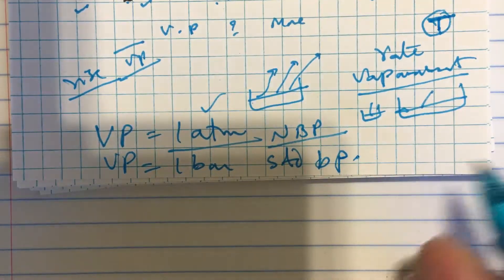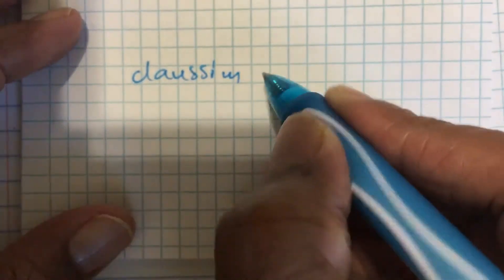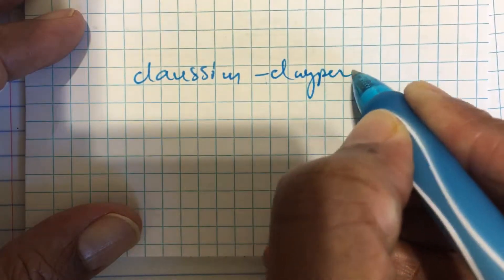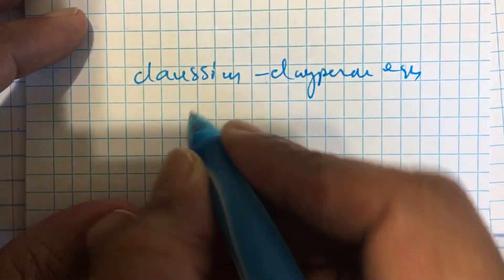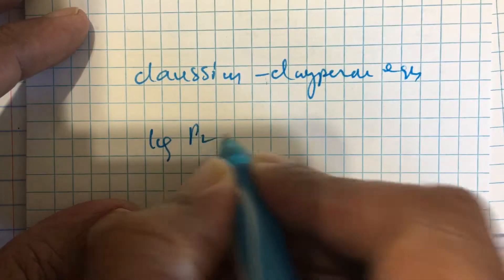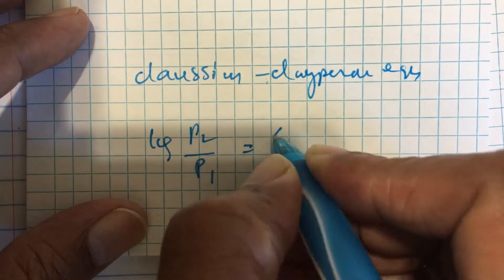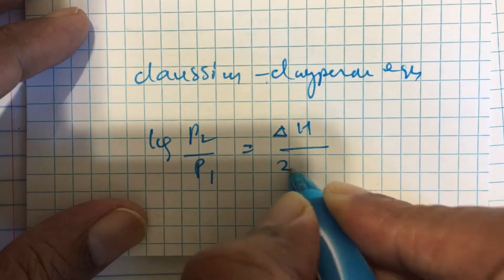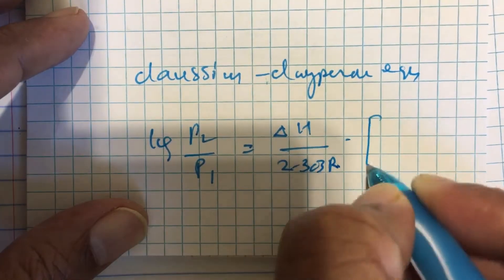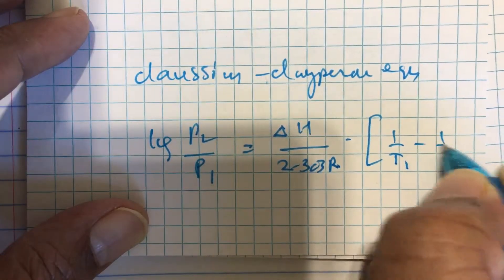Next point, the variation of vapor pressure of a given liquid with respect to temperature is given by an interesting equation called Clausius-Clapeyron equation, which says that log p2 by p1 is equal to delta H by 2.303 R into 1 by T1 minus 1 by T2.